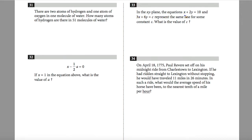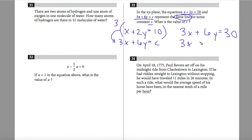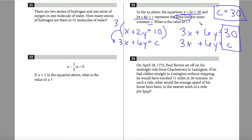Question 33: in the xy-plane, the equations x plus 2y equals 10 and 3x plus 6y equals c represent the same line. How do I make the first line equivalent to the second? I multiply the entire first equation by 3, giving me 3x plus 6y equals 30. Comparing to 3x plus 6y equals c, c will equal 30 overall.